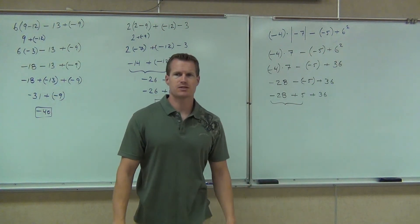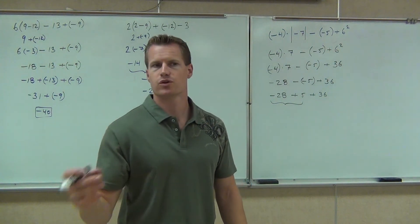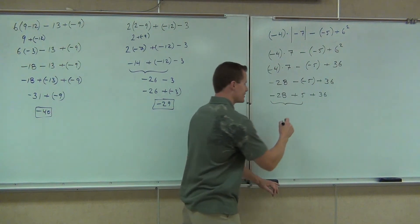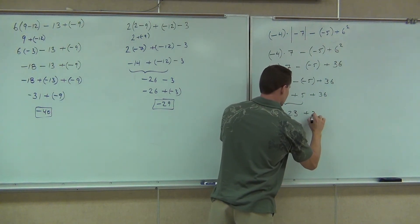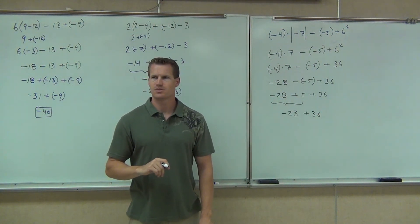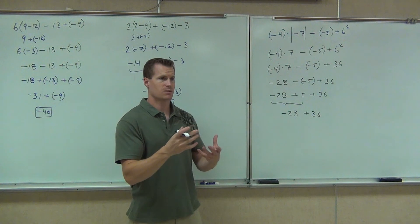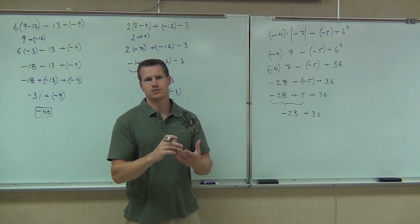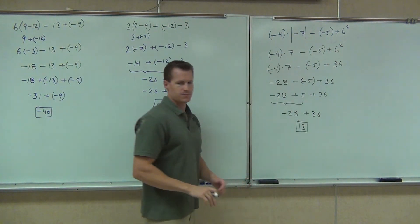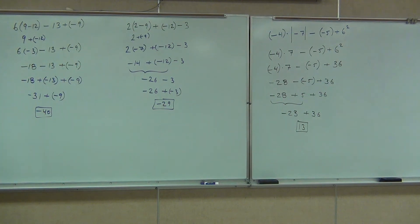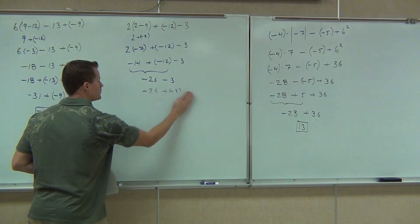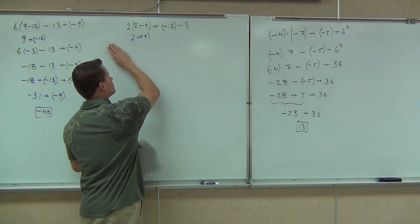Those are kind of the big ones for subtraction — you need to know how to do this consistently every time, and you'll have a much easier time with order of operations. Continue on: negative 28 plus 5 — we have different signs, so we subtract, keep the sign of the bigger number, and get negative 23. Then negative 23 plus 36 — subtract, sign of the bigger number — positive! Positive. Try a couple on your own.